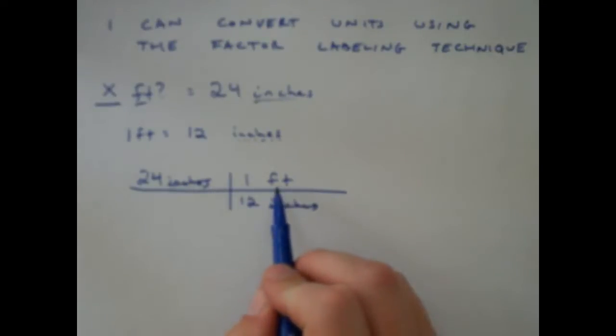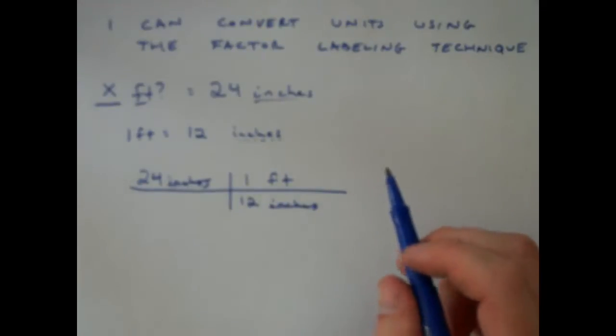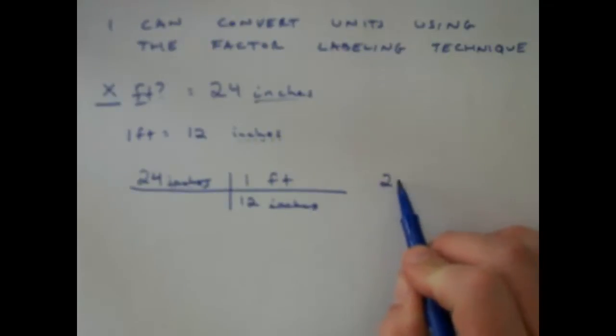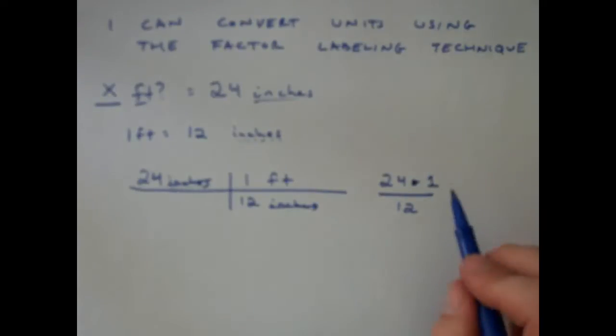Now I'm left with feet as my last unit. My final step is I'm just going to do the math. All I do is multiply what's on the top and divide by whatever's on the bottom. As you can see here, I've got 24 times 1, which is 24, divided by 12, which is going to give me 2.